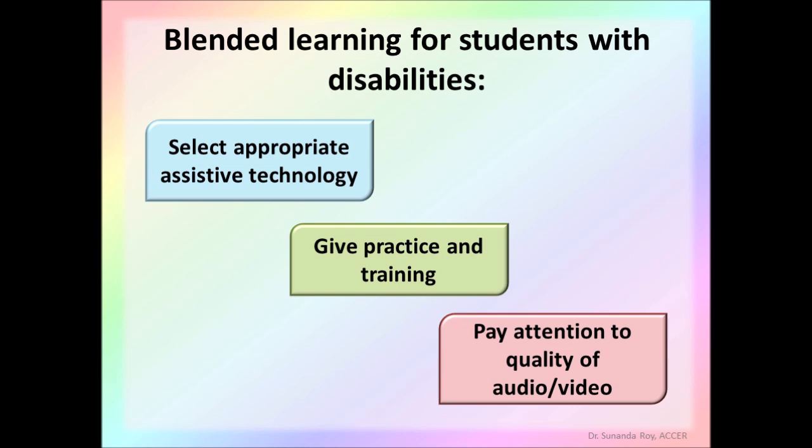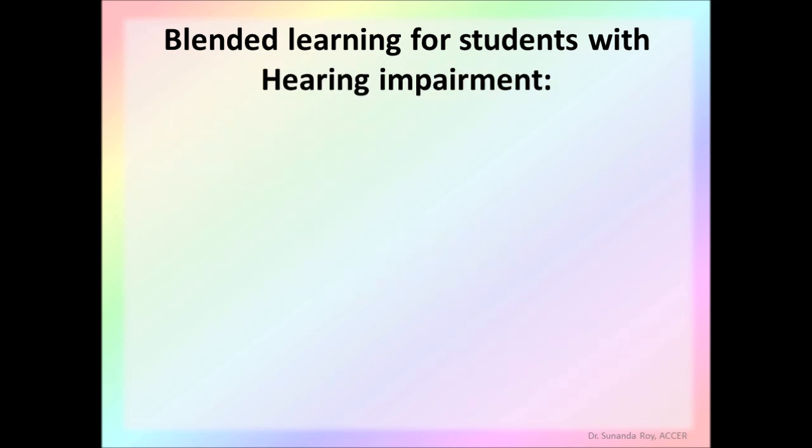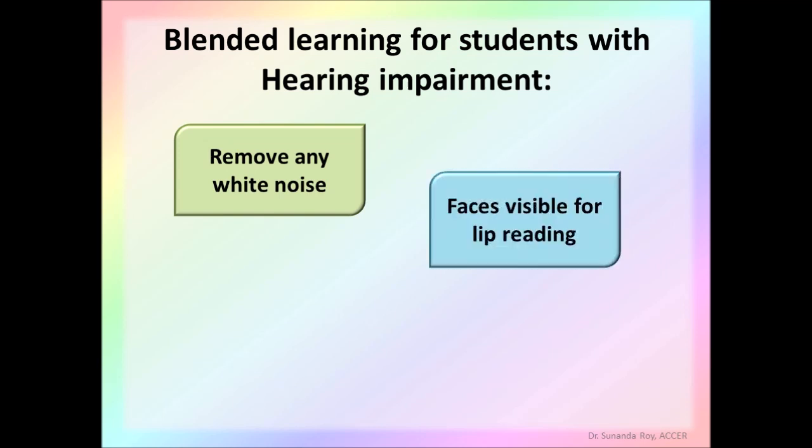Specifically, there are certain things the teachers should take care of while dealing with students with disabilities in blended learning settings. Let's look at a few of them. We start with the students with hearing impairment or students who are hard of hearing. For students who are mildly or moderately hearing impaired, that means they can hear a little bit. Any type of white noise or background noise that might affect the audio of the content should be totally removed. So that there is no disturbance in the audio. Some of these students may depend on lip reading. So the faces in the video must always be visible to the students.